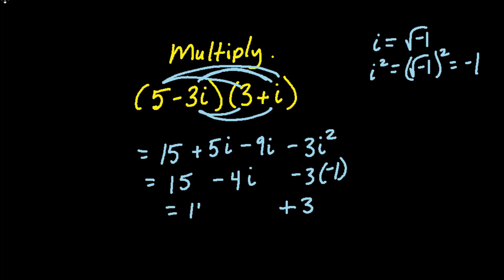After we multiply the negative 3 and negative 1 we will have a positive 3 for the last term. We can bring down the 15 minus 4i. And then we can add 15 and 3 together to get the final answer. So the final answer is 18 minus 4i.